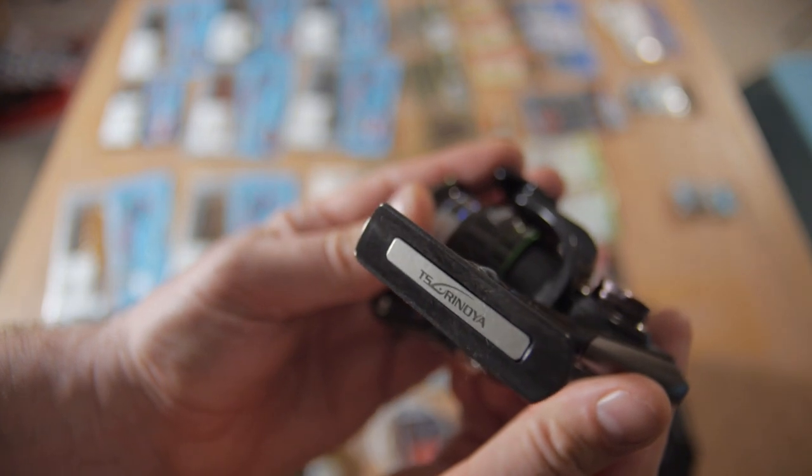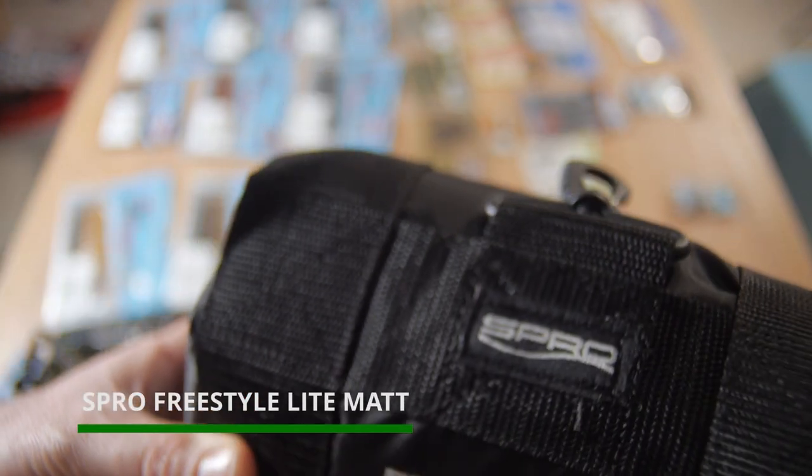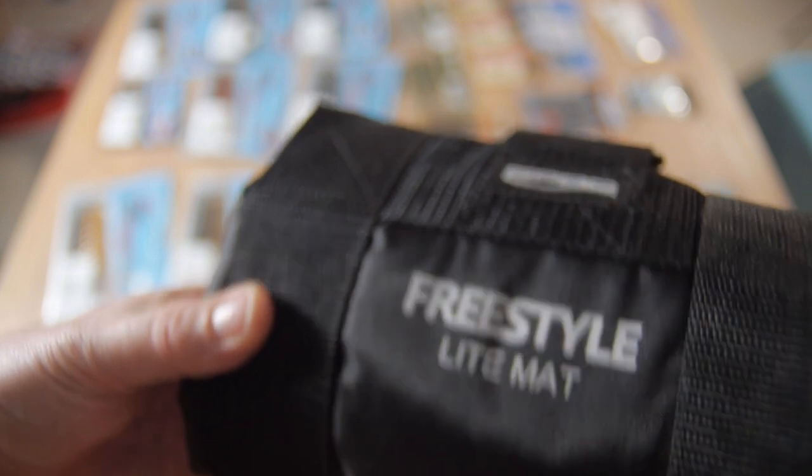Next up we have the Spro Freestyle Mat Light. This is a smaller de-hooking mat. As you know, a lot of the fishing which I do is roving on the riverbank, trying to find perch, chub, and pike. This is perfect for all of those applications. I really hate having to drag around a massive de-hooking mat. This is really nice and lightweight.